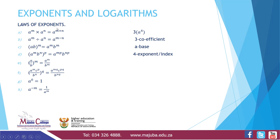Laws of Exponents. First law: A to the power N times A to the power M equals A raised to M plus N. We're having the same bases — we keep one base, and since we have a multiplication sign, we add the exponents.